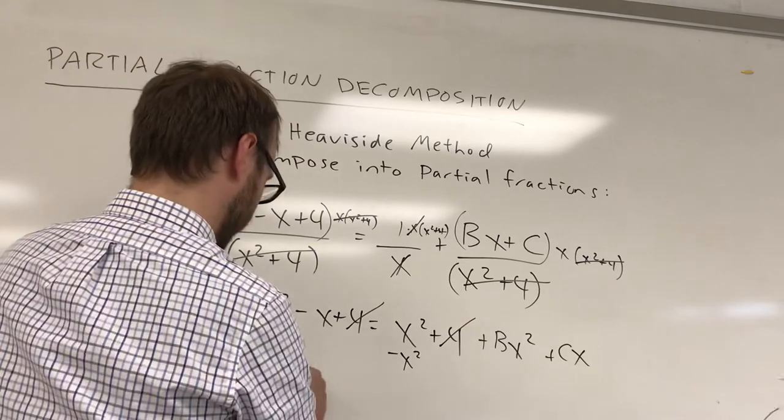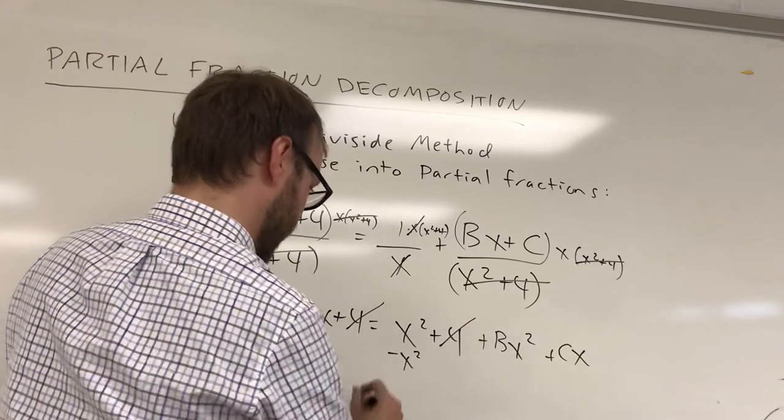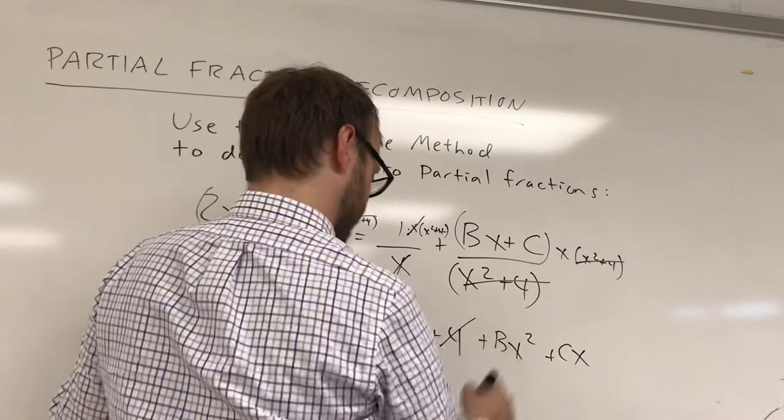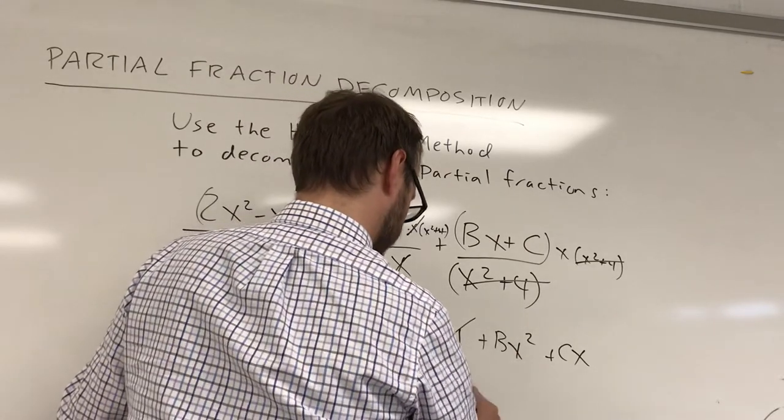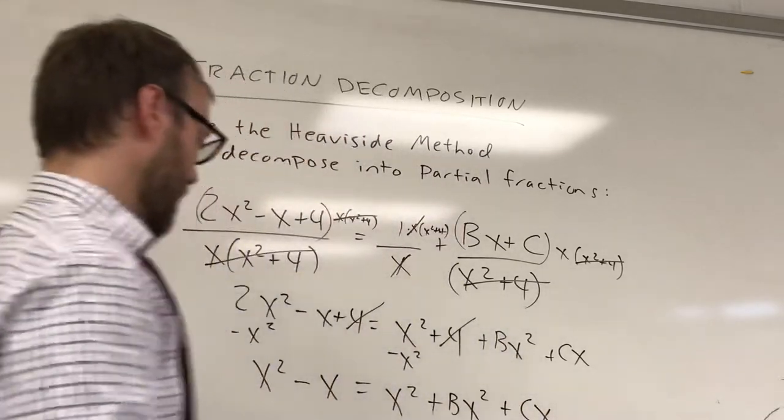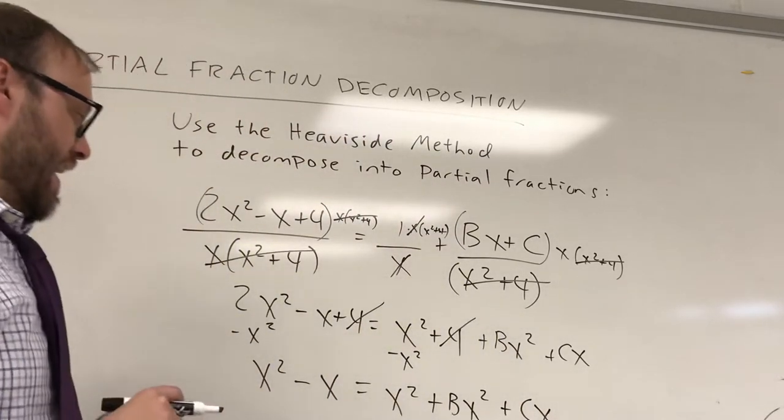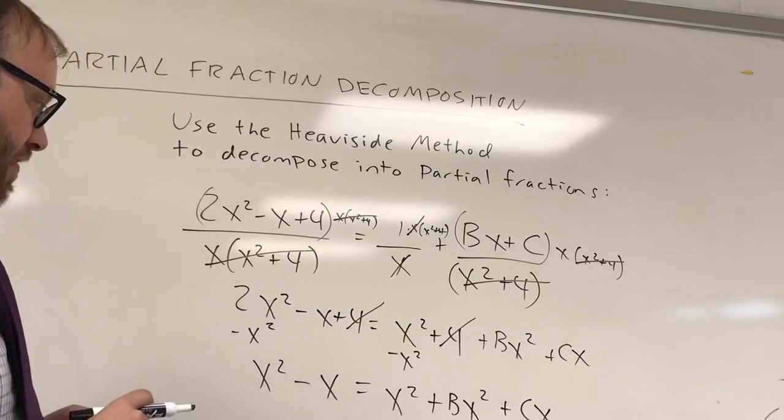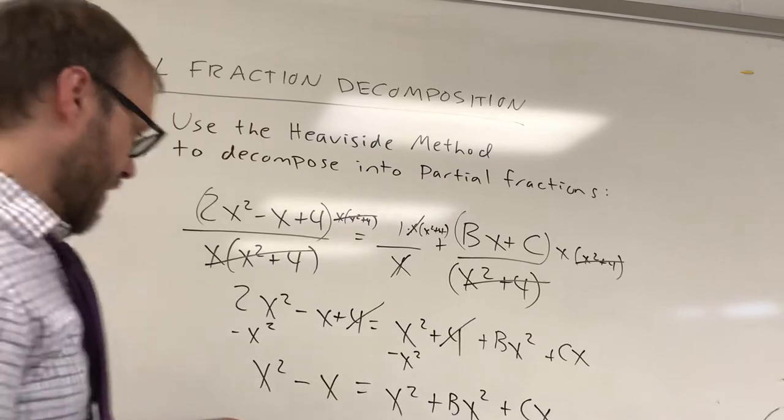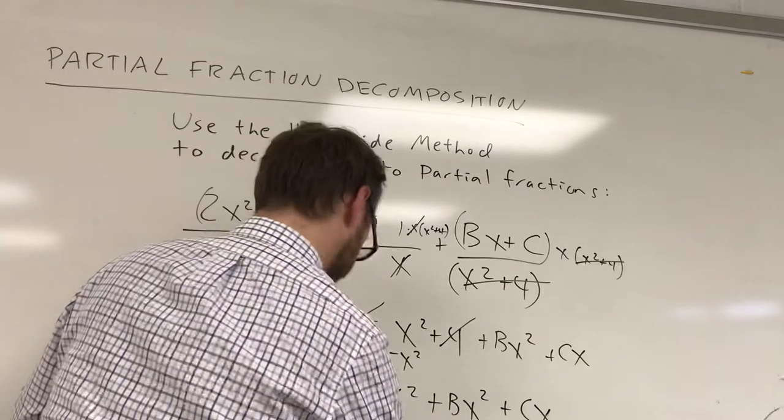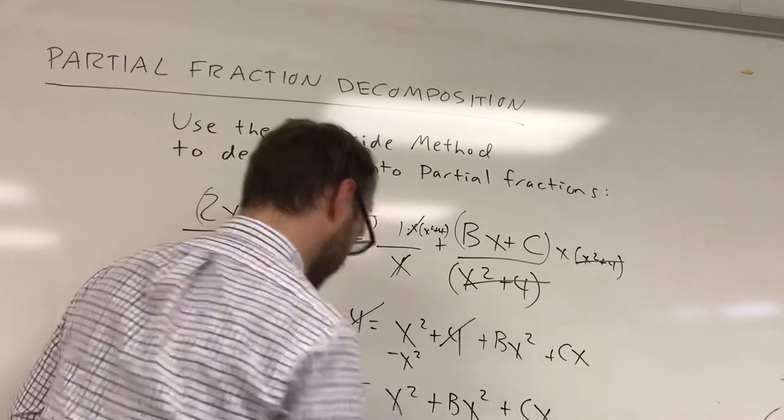That's gonna give me x squared minus x is equal to x squared plus bx squared plus cx. And now we can see a couple of different things. First of all we can see that b plus 1 needs to equal 1 here. Right?